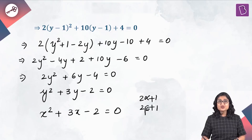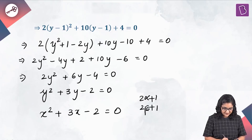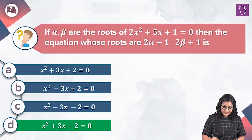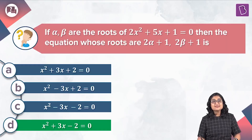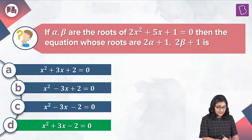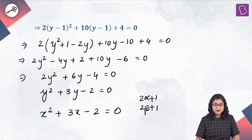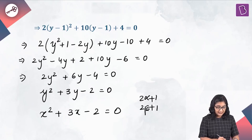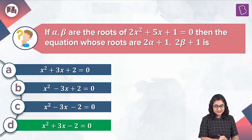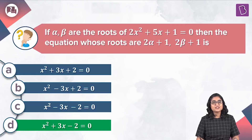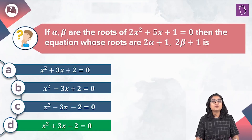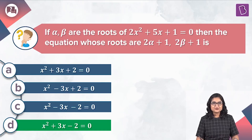Let's see which option is correct. As you can see, option D matches with the answer we got here, which is x squared plus 3x minus 2 equal to 0. Hence, option D is the correct answer to this question.